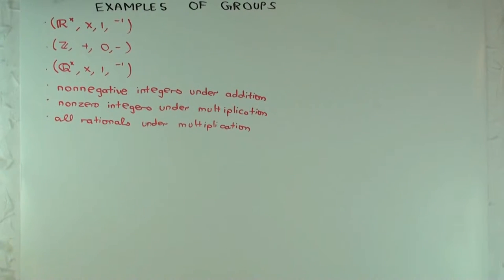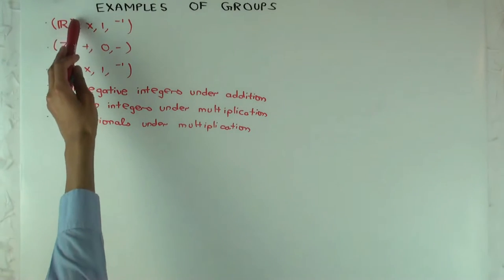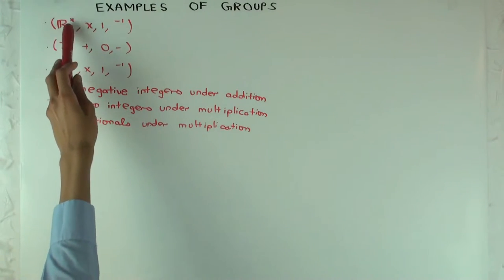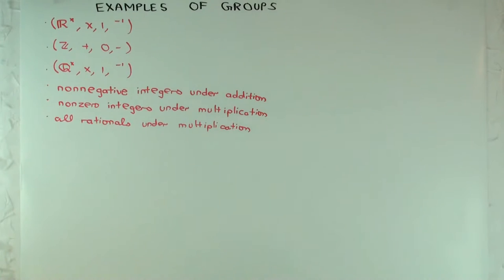So in this talk, I'm going to consider some simple examples of groups. And these examples are quite simple and not very representative of the full diversity of groups, but that's how we have to start. Okay, so the first example I'm going to consider is R star.